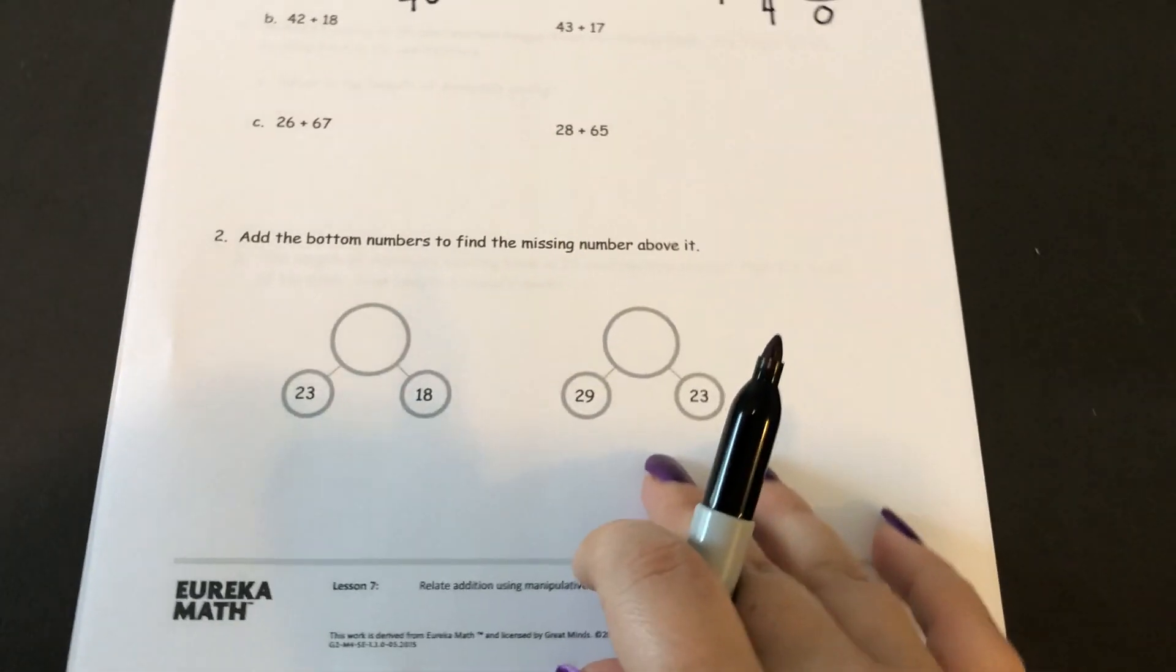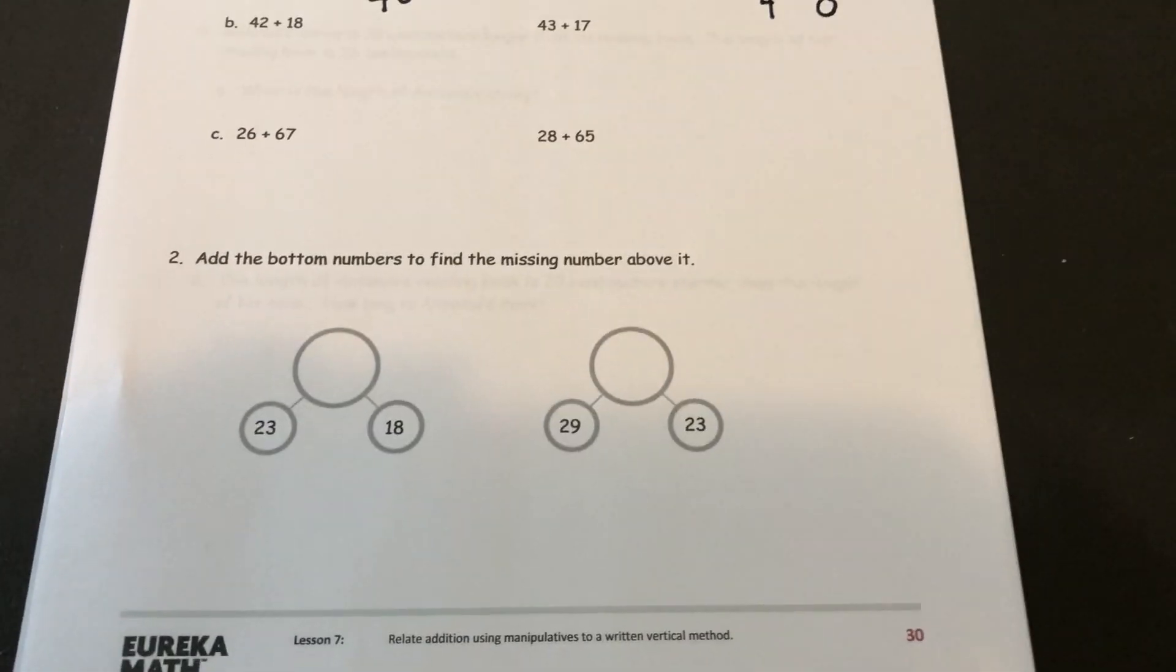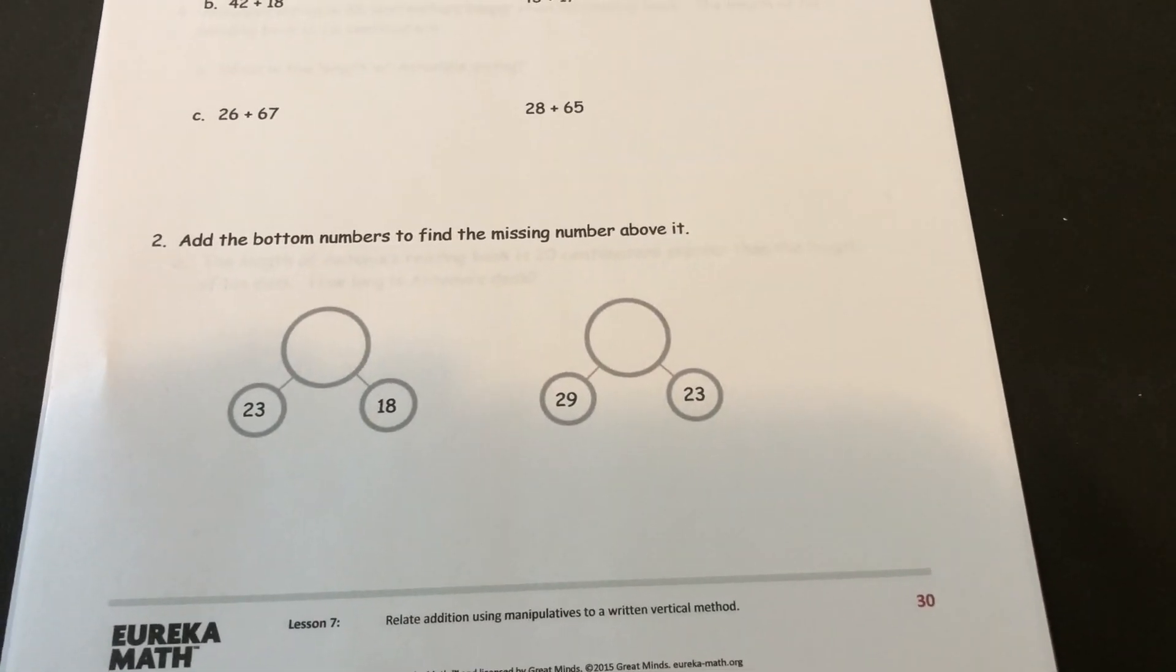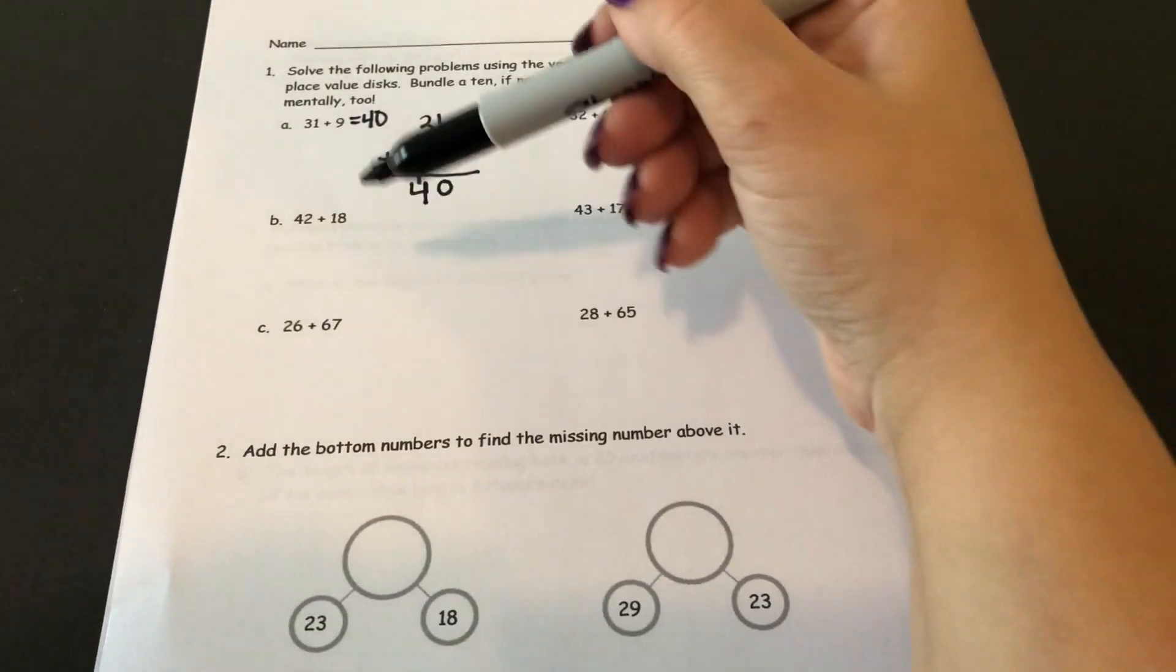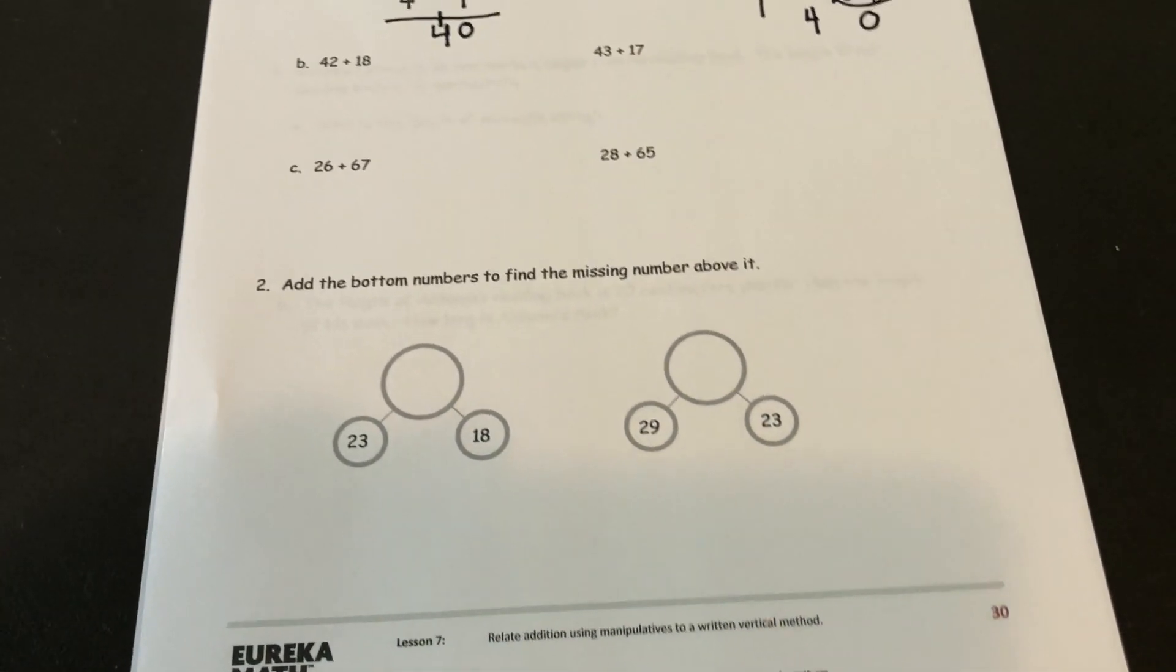Section 2 says to add the bottom numbers to find the missing number above it. You could draw your place value chart or you could do vertical form. It's totally your choice how you want to add those up. And then you'd put your answer in the large circle.